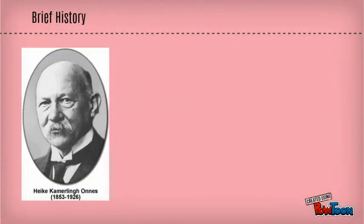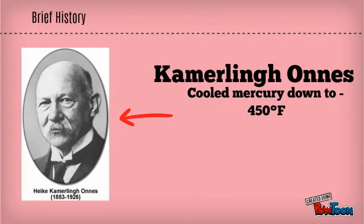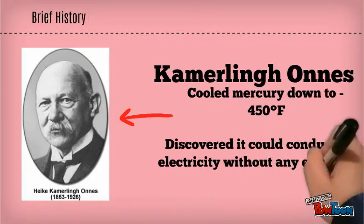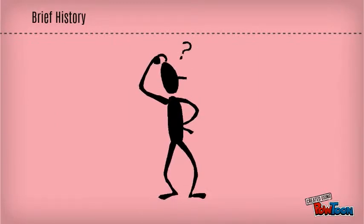In 1908, a Dutch physicist, Kamerlingh Onnes, cooled mercury down to negative 450 degrees Fahrenheit and discovered that it could conduct electricity without energy loss. This astonishing discovery has puzzled the greatest minds of the century ever since.